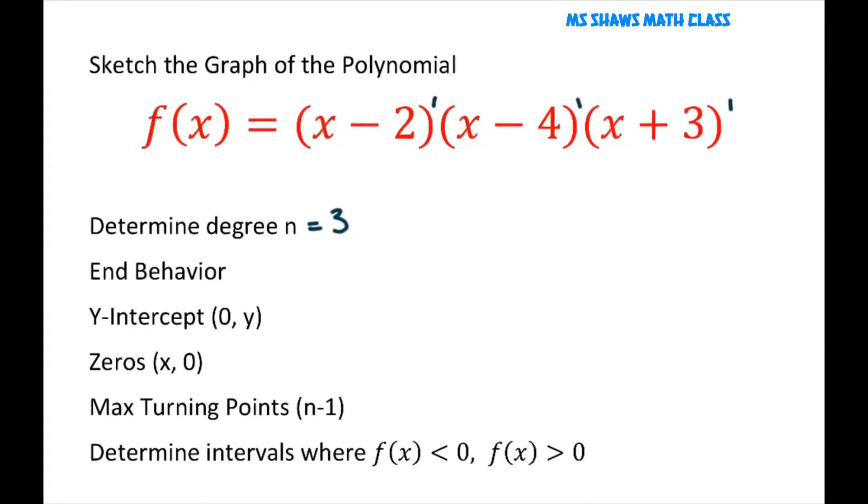That means we have maximum turning points of 3 minus 1, which equals 2. So the graph is going to turn at two places. We're going to talk about end behavior in just a minute. The main thing you need to know is the degree and that our lead coefficient here is positive.